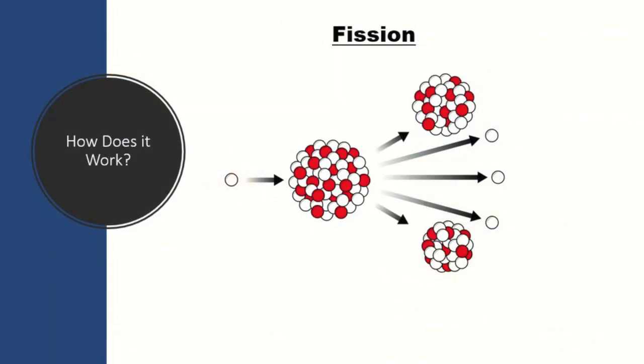Traditional nuclear fission, used in reactors all over the world, operates by splitting heavy atoms apart into smaller atoms to generate energy. It takes in uranium and gives off nuclear waste and heat.